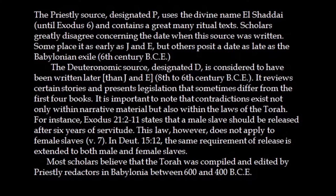The priestly source, called P, uses the divine name El Shaddai and has a lot of ritual texts. There's disagreement about the dating of P — some say it's as early as J and E, others posit a date as late as the Babylonian exile, with layers as old as the 8th century BCE. The Deuteronomic source, called D, was written later than J and E, from the 8th to the 6th century BCE. It is composed of the book of Deuteronomy, which is why Deuteronomy seems so different from the other four books.